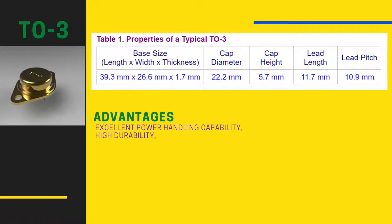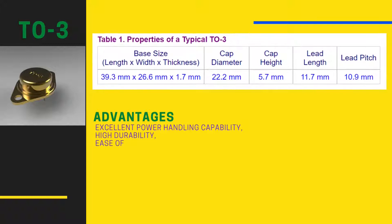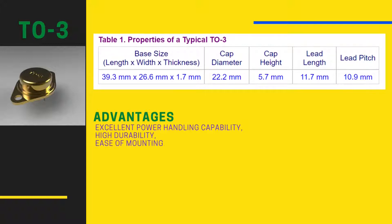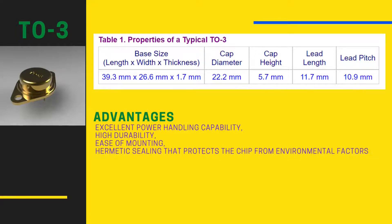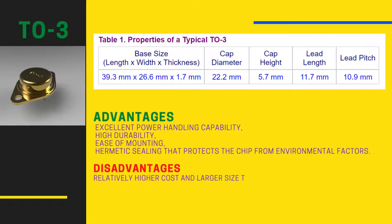Advantages of the TO3 package include excellent power handling capability, high durability, ease of mounting, and hermetic sealing that protects the chip from environmental factors. Disadvantages include its relatively higher cost and larger size compared to other packages.